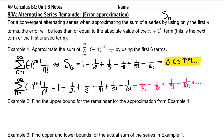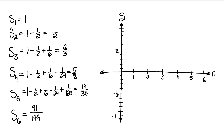I'm going to graph some partial sums so you can see what is visually happening each time we add another term in a convergent alternating series. Here you can see I've evaluated the first six partial sums. The first partial sum is just the very first term, so when n equals 1, my sum is 1.